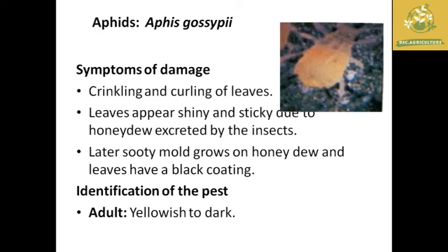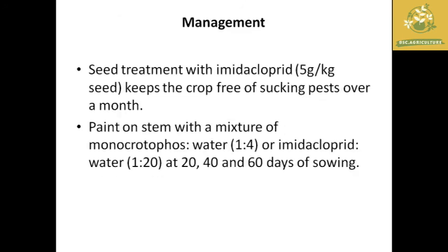The next important insect is aphids, where the scientific name is Aphis gossypii. The symptoms include crinkling and curling of leaves. Later, infested leaves appear shiny and sticky due to honeydew secretion. This leads to secondary infections like sooty mold growth and a black coating on the leaf surface. The adult is yellowish to dark in color. Management includes seed treatment with Imidacloprid, keeping the crop free of sucking pests over a month, and painting on the stem with a mixture of Monocrotophos with water at a ratio of 1:4, or Imidacloprid at a ratio of 1:20 at 20, 40, and 60 days after sowing.